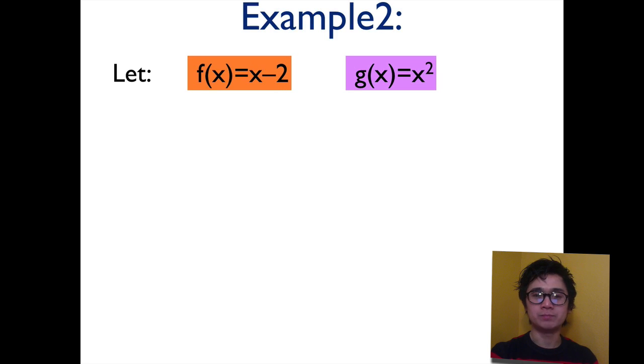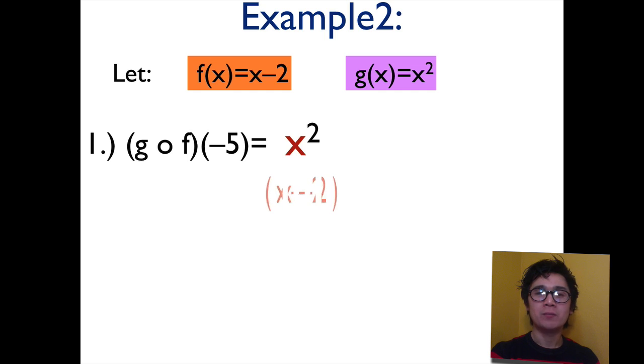Let's have the second example. And this time, let's evaluate g of f of negative 5. Now evaluating this function is different from the first example because we are now replacing x by negative 5. First, let's evaluate g of f. Since g is the first letter in our composition, we will use the function g and replace x by x minus 2. And don't forget the exponent 2 because g function is x squared.